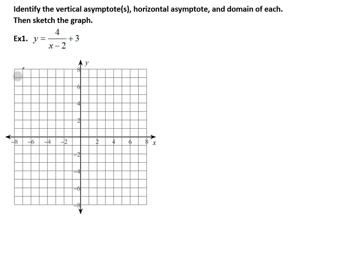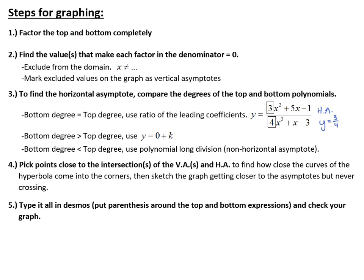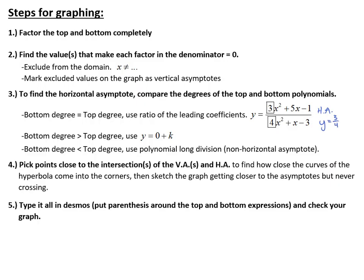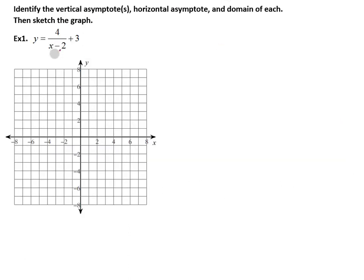Let's try our first example. Identify the vertical asymptote or asymptotes, horizontal asymptote, and the domain of each, then sketch the graph. Step one is to factor — there's nothing to factor from the top or bottom, so we skip step one. Step two: find all values that make the denominator equal zero. We take the denominator, x minus 2, and set it equal to zero. Adding 2, we get x equals 2.